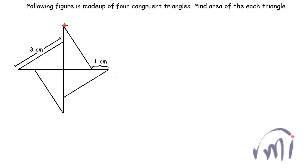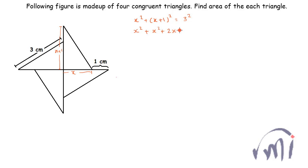The hypotenuse of each triangle is 3 centimeters and the gap is 1 centimeter. If I call the base x, then the height of the triangle is x plus 1. Using the Pythagorean theorem: x² + (x + 1)² = 3², which expands to x² + x² + 2x + 1 = 9, giving us 2x² + 2x = 8, or x² + x − 4 = 0.